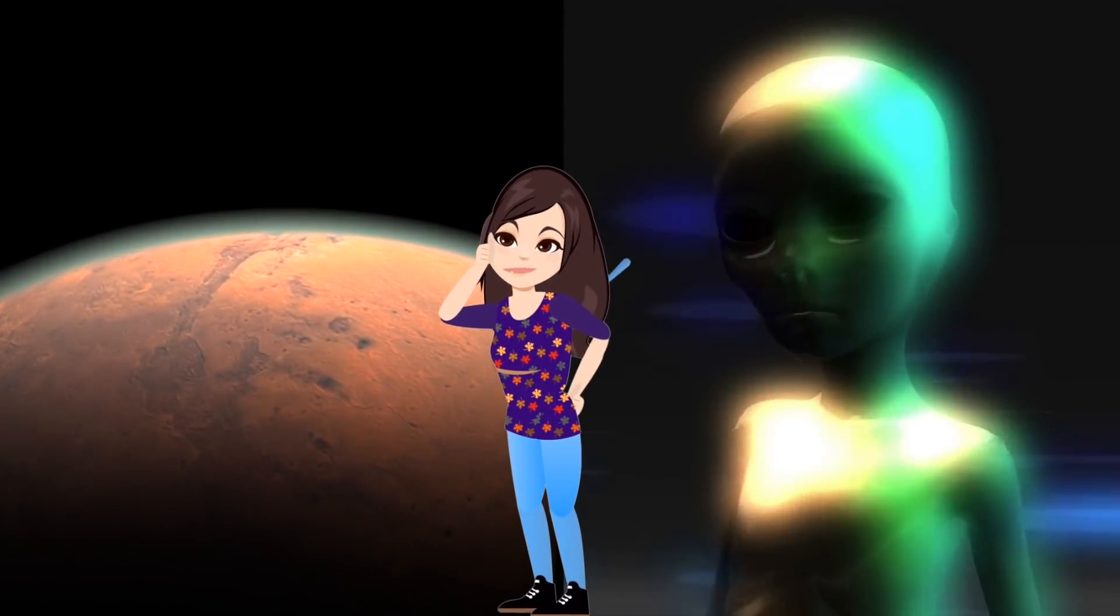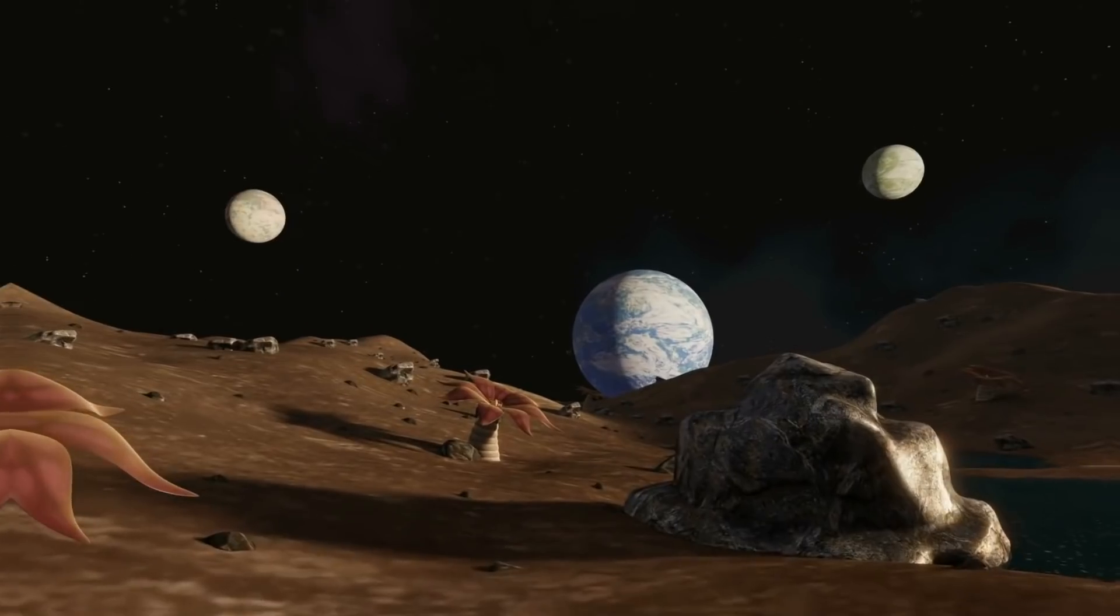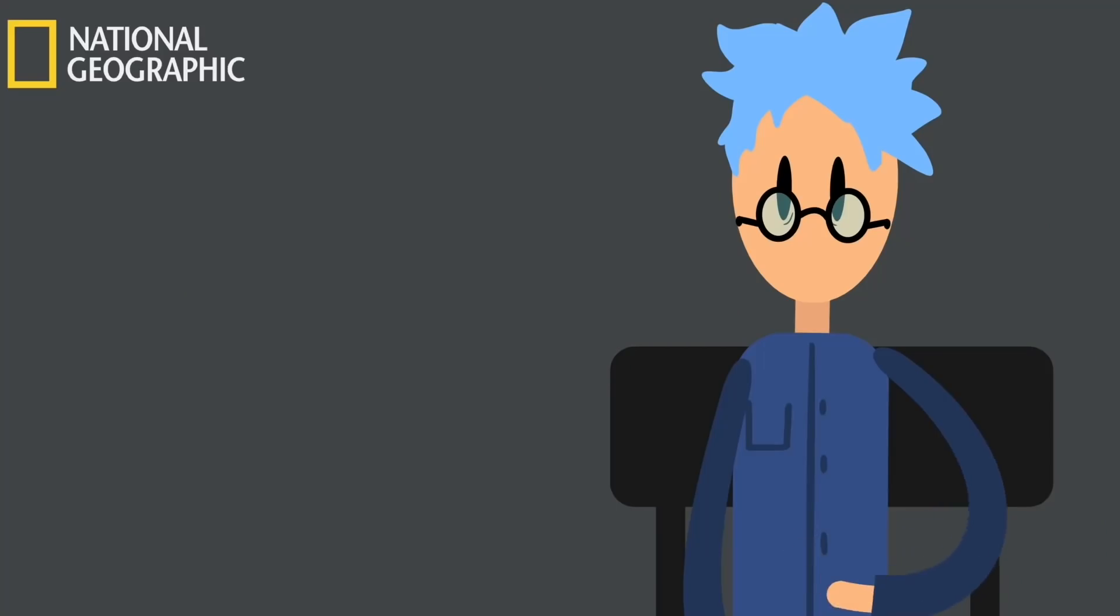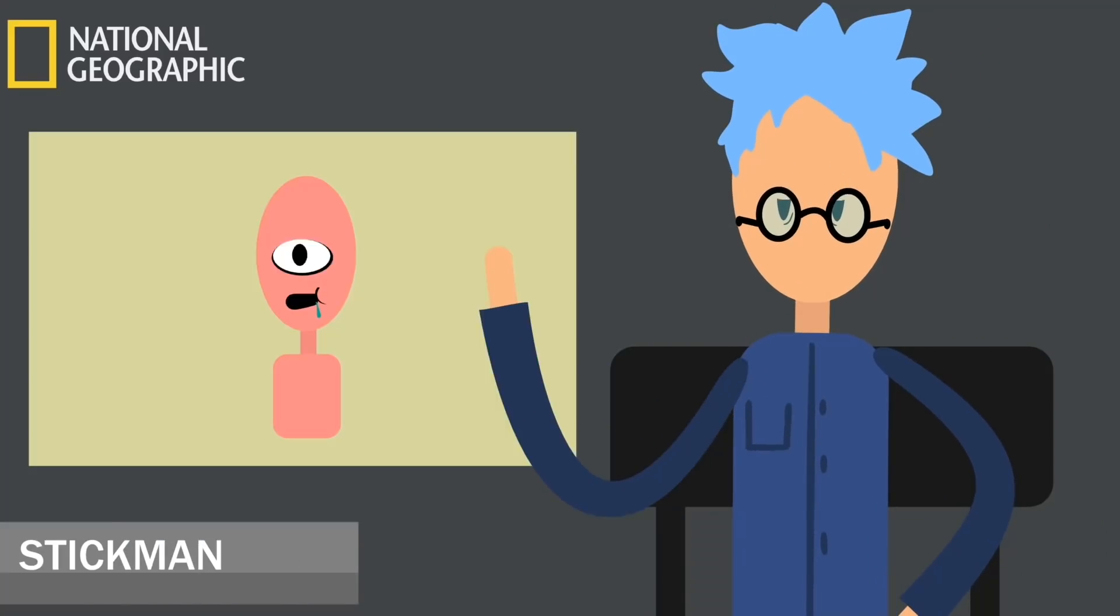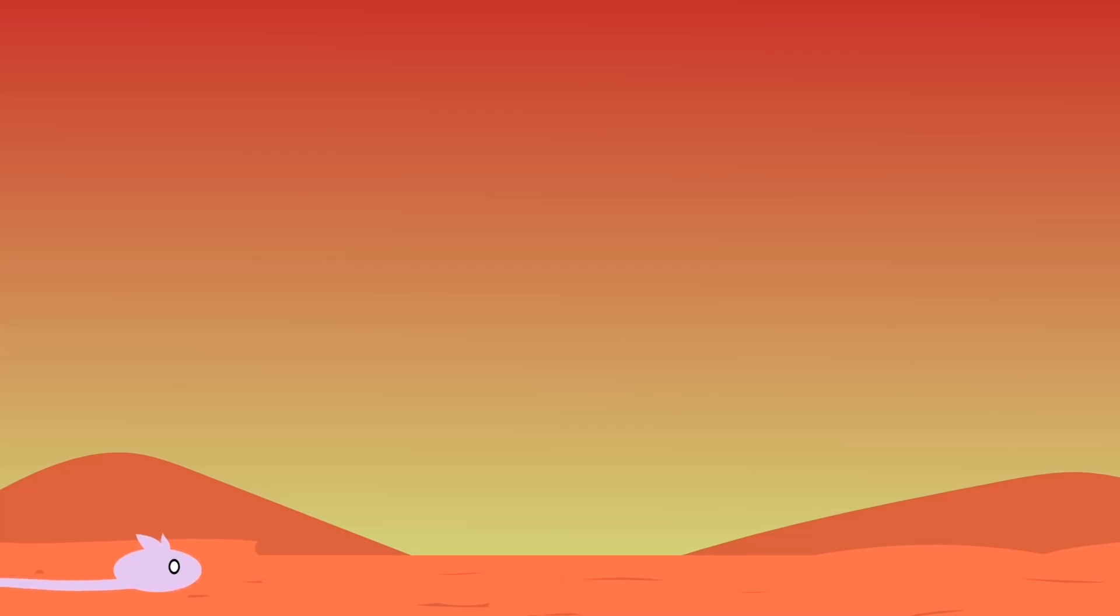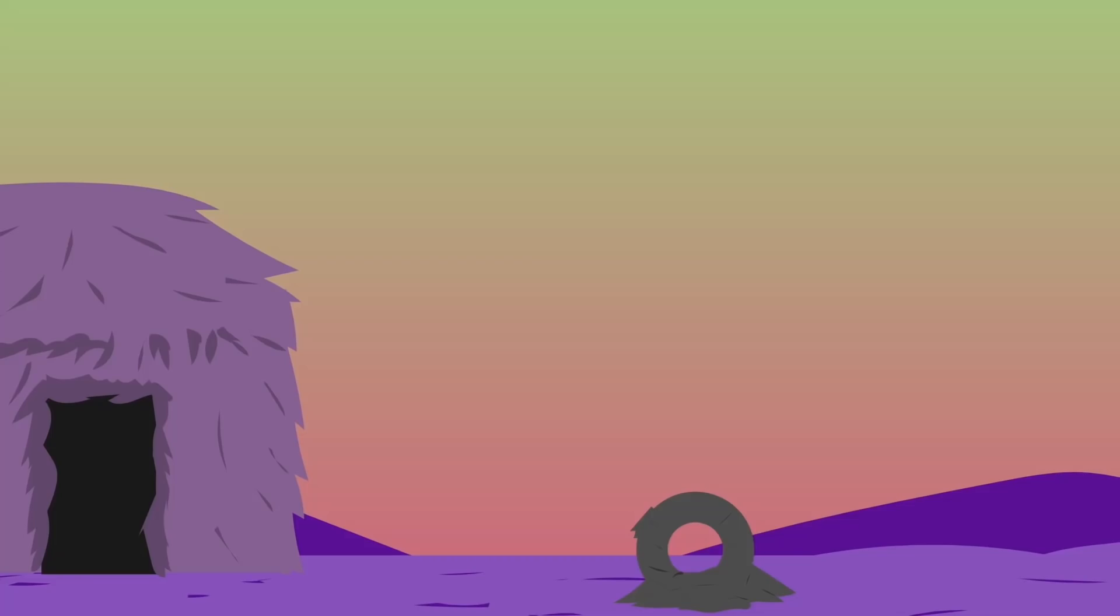For example, some people simply don't believe that there is life on other planets, or that if it does exist, it's incredibly rare. Others think that even if life exists elsewhere, intelligence may not. It's also possible that life on other planets is frequently wiped out by extinction events which have happened here on Earth. There are numerous other proposed explanations, including the possibility that any existing intelligent civilizations may still be in their primitive stages and aren't technologically advanced enough to communicate outside their planet.